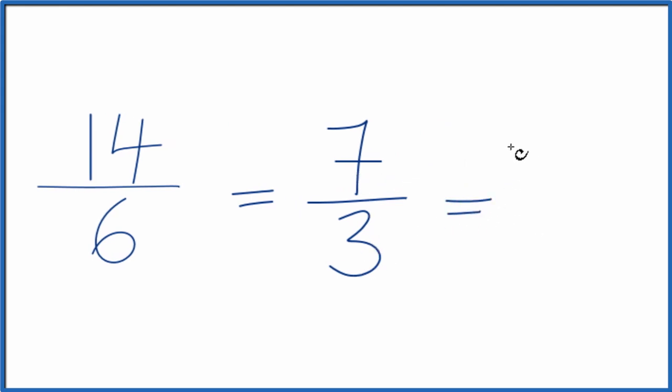3 goes into 7 two times. 2 times 3 is 6 with 1 left over. And then we just bring this denominator here, the 3, across. So the improper fraction 7 thirds equals the mixed number 2 and 1 third.